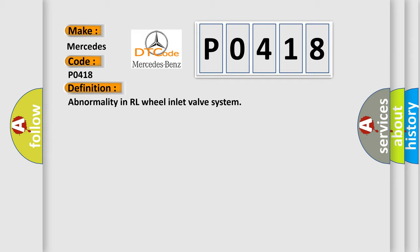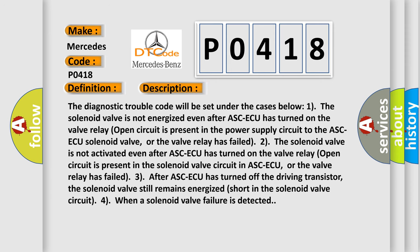Abnormality in RL Wheel Inlet Valve System. The Diagnostic Trouble Code will be set under the following cases. One: the solenoid valve is not energized even after ASCAQ has turned on — a valve relay open circuit is present in the power supply circuit to the ASCAQ solenoid valve, or the valve relay has failed. Two: after ASCAQ has turned off the driving transistor, the solenoid valve still remains energized — short in the solenoid valve circuit — when a solenoid valve failure is detected.